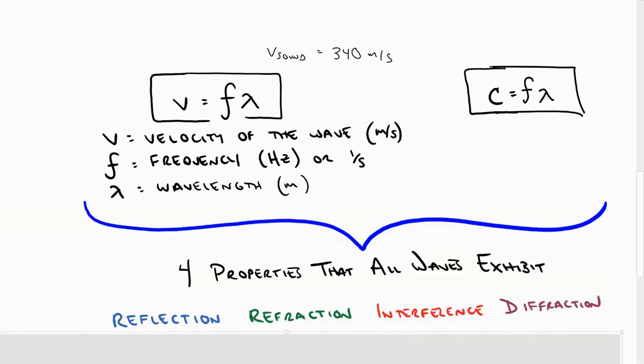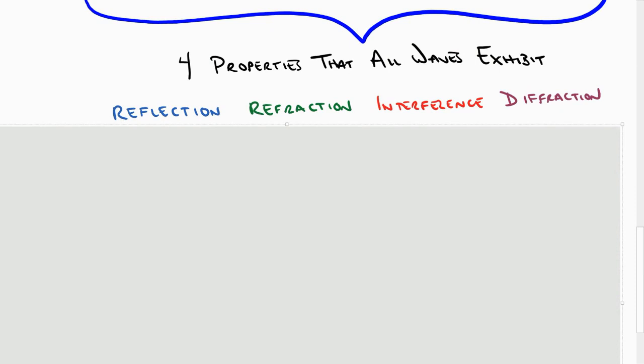Now, last thing, last thing for a moment, is that there's four properties that all waves exhibit. Reflection, refraction, interference, and diffraction. Those are vocabulary words you have to be comfortable with. So, if I were to zoom out.